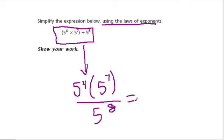So they want us to rewrite this in terms of the base 5. I'm going to simplify the numerator first. If you remember from other videos, we add the exponents here. So it's 5 to the 4 plus 7. That's still over 5 to the 8th. And that's 5 to the 11th.